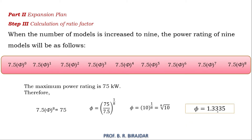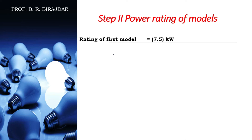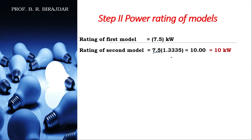Solving gives φ = 1.3335, which is the ratio factor for the nine-model series. Once we have this ratio factor, it is easy to find all models. The first model is 7.5 kilowatt as before. The second model is 7.5 × 1.3335 ≈ 10 kilowatt.